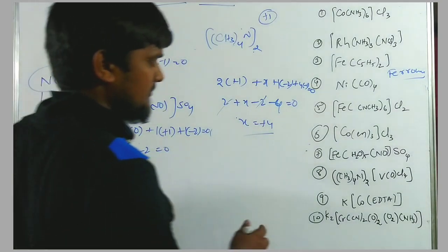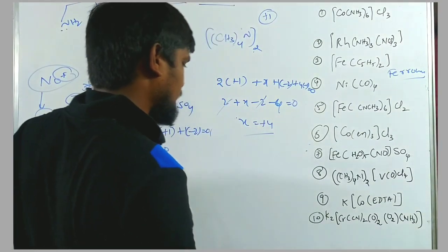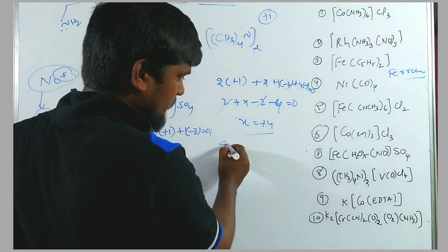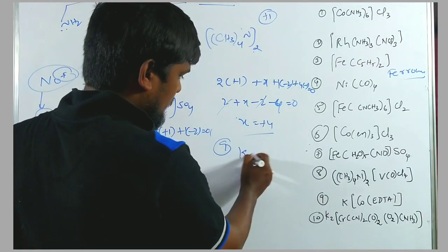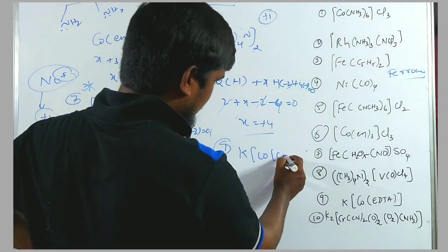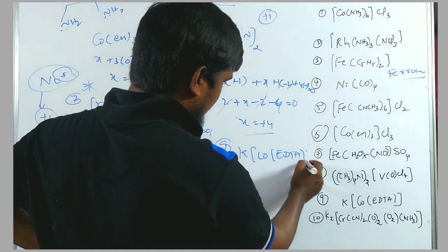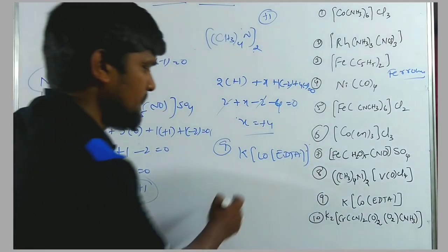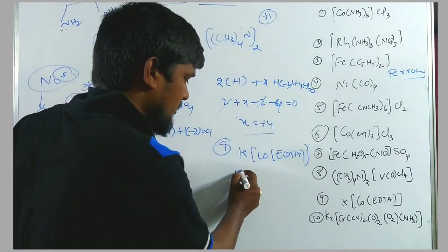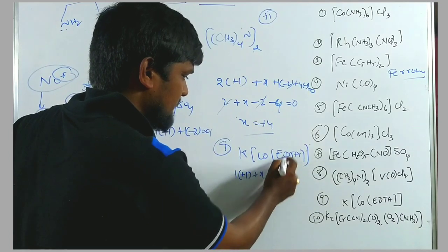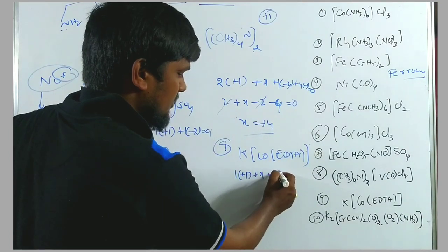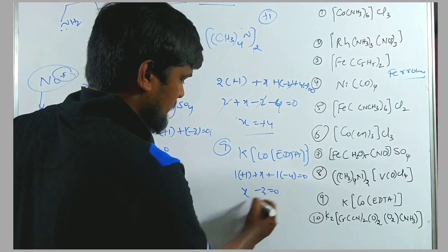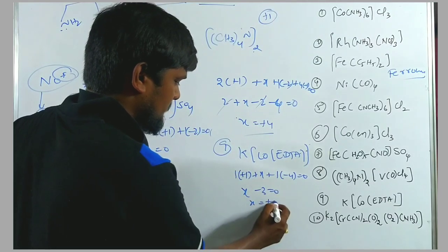Ninth example: K[Co(EDTA)]. EDTA is a flexidentate ligand with charge −4. So: 1(+1) + X + (−4) = 0, giving X − 3 = 0, X = +3.